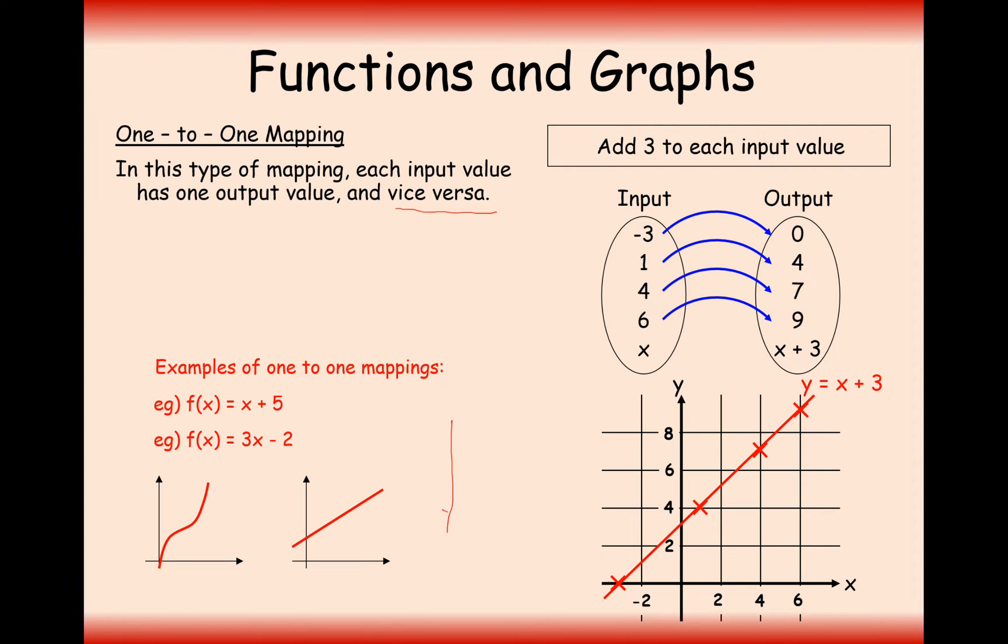For example, this sort of graph here is not a one-to-one function. The reason being is because if we were to take, say, the output value of six here, there would be one, two, three values that six will be the output value for. There'd be three values that would all go to the value six, and that is not a one-to-one mapping.